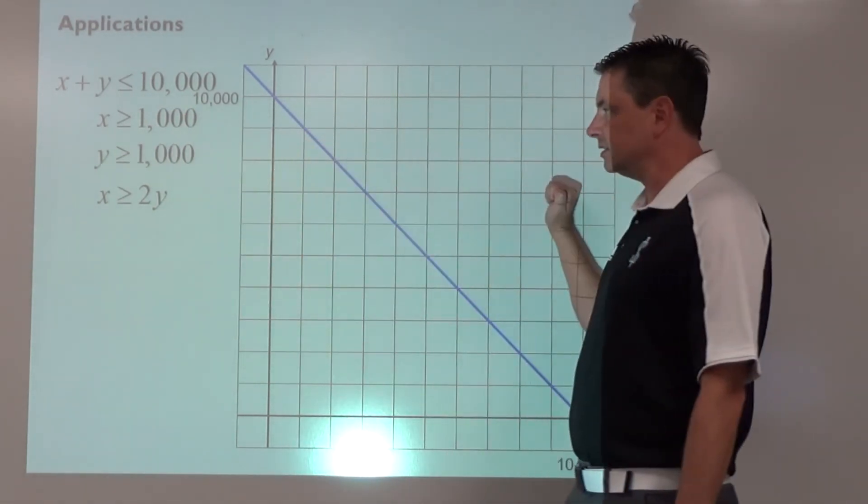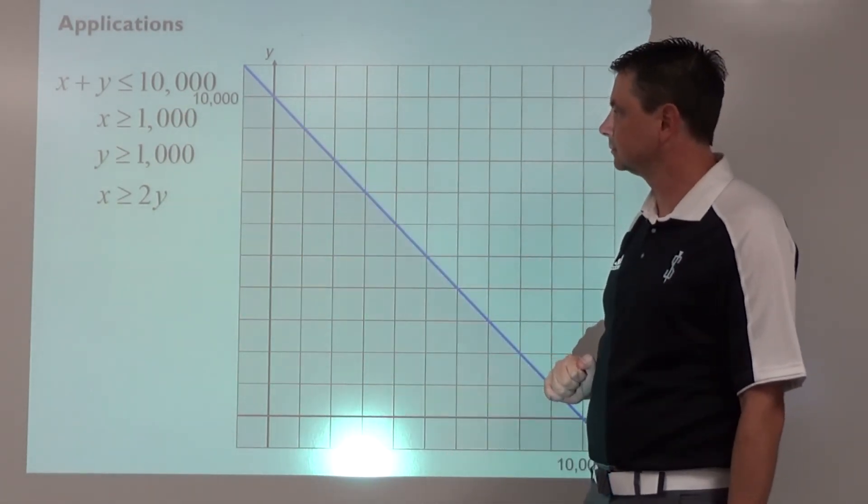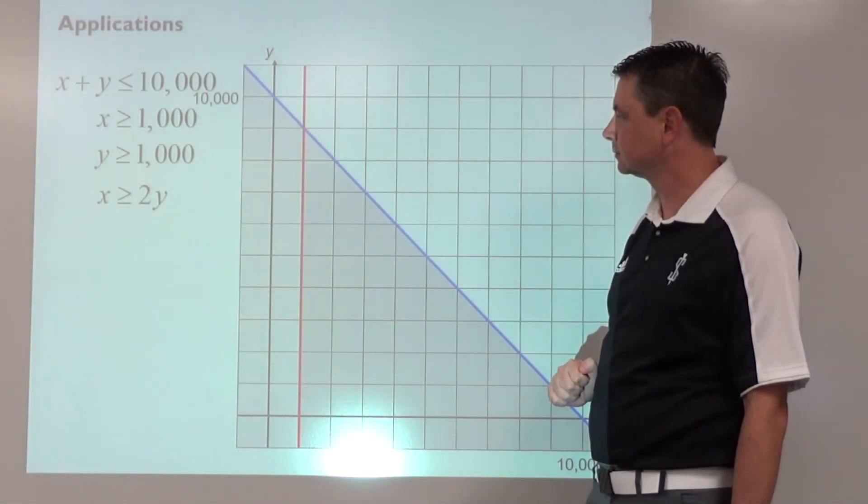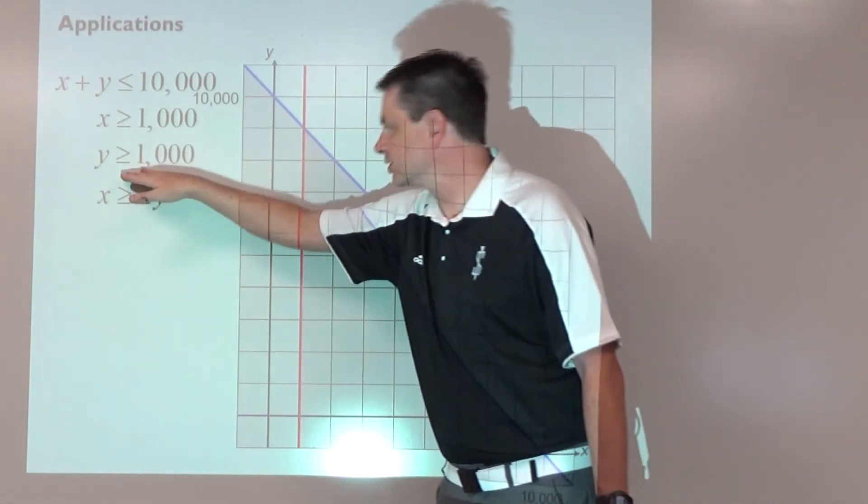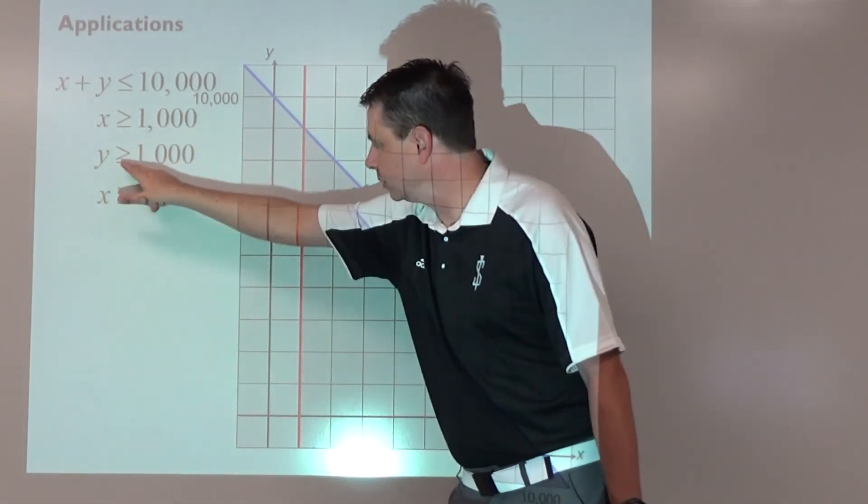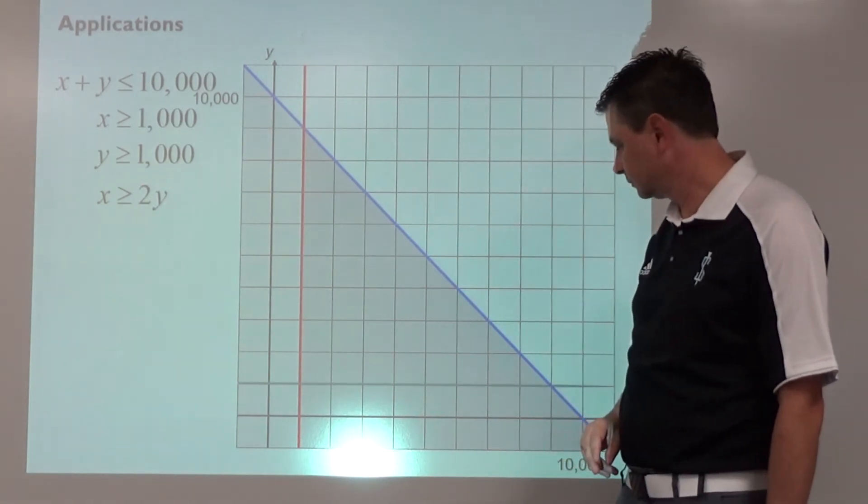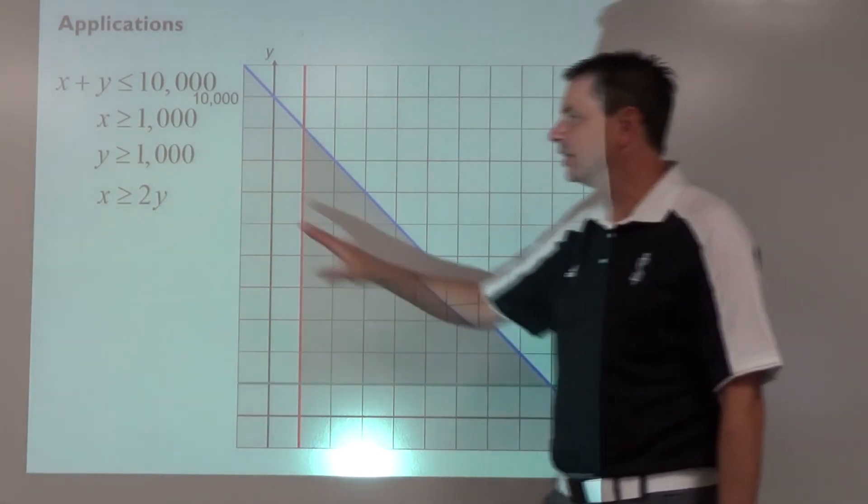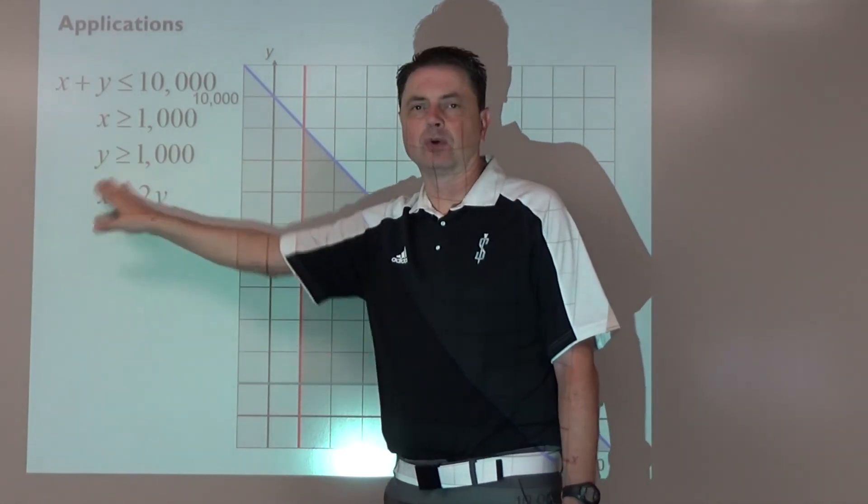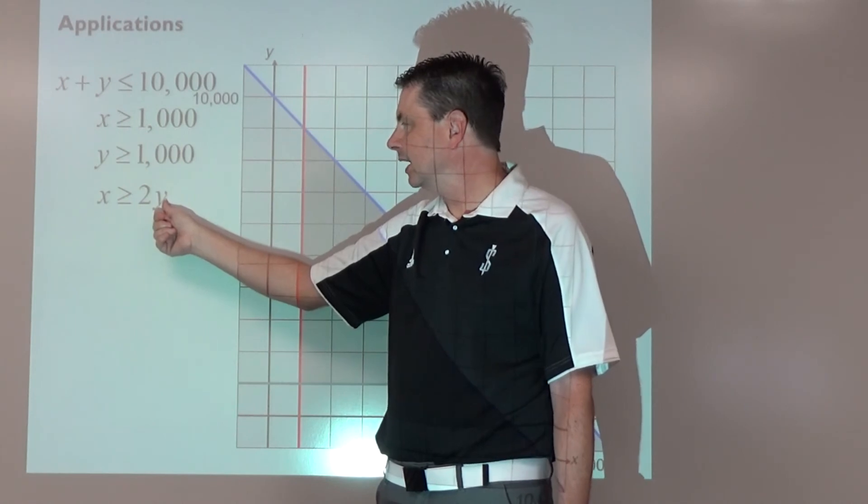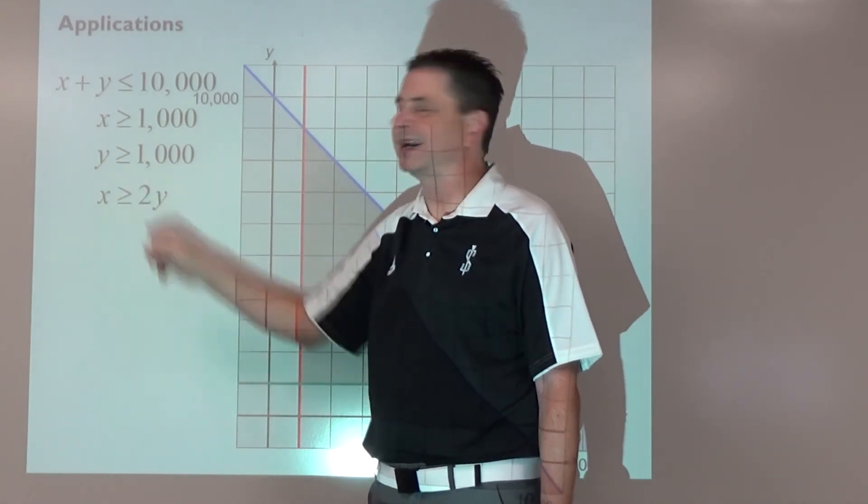We'll get to the shading in a bit. X is greater than or equal to $1,000—vertical at $1,000, shade to the right. Y is greater than or equal to $1,000—horizontal, shade above.